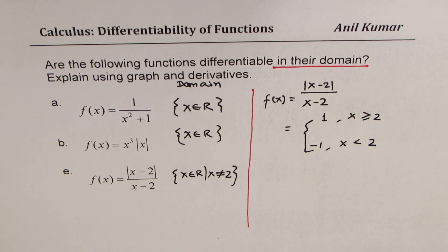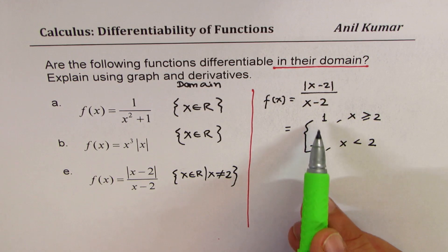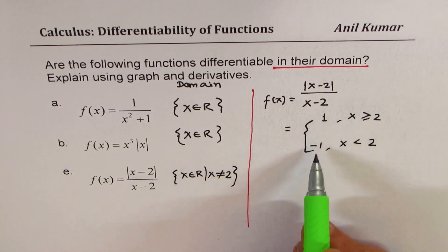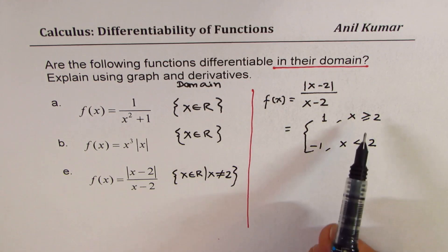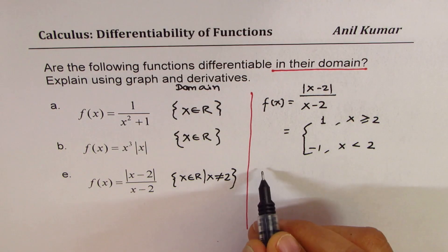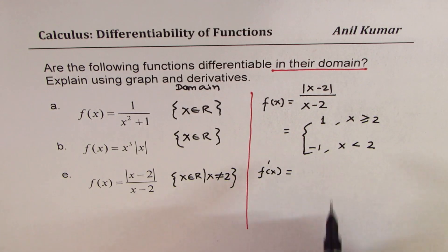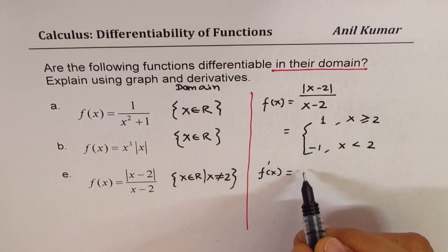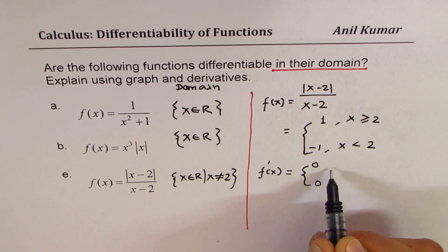If you graph this function, the derivative is 0 because these are constant values. Finding f'(x): derivative of 1 is 0, so we get derivative of 0 for both cases — whether x is greater than or equal to 2 or less than 2.